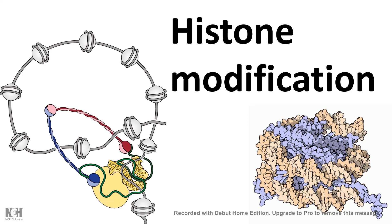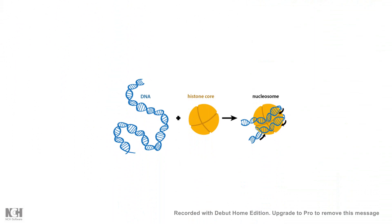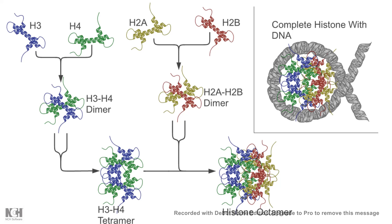Our chromosome is made up of nucleosomes — it's like a bead on string structure. The nucleosome has two components: a histone core and DNA. DNA is wrapped around the histone core, making this beads-on-string appearance. Inside the histone core there are several histones like H3, H4, H2A, H2B, and a linker histone H1, and around this histone octamer the DNA is wrapped.